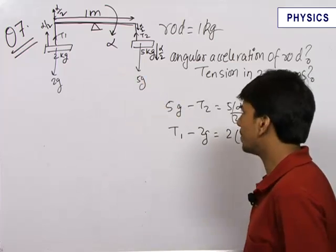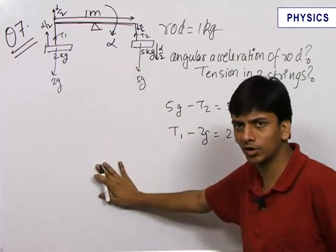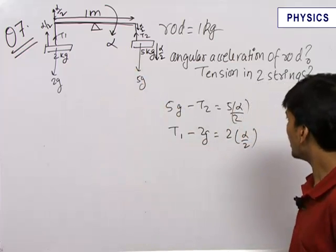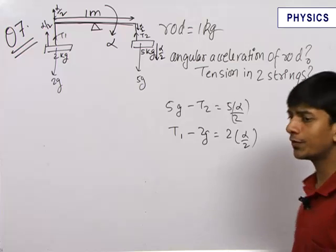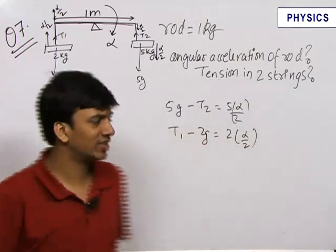That is mass into acceleration. This is simple Newton's law application in the vertical direction on the two objects. Now there are again three variables, T1, T2 and alpha. So we need to find out one more equation to solve the whole question.